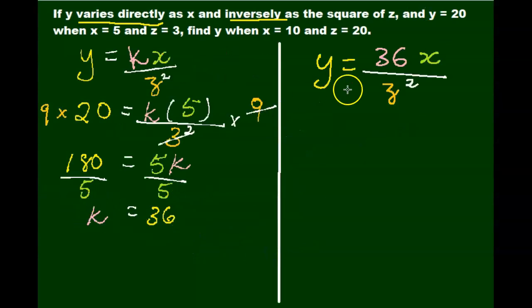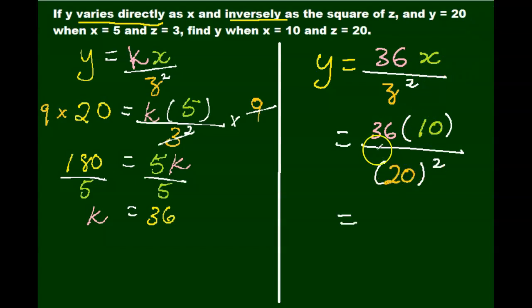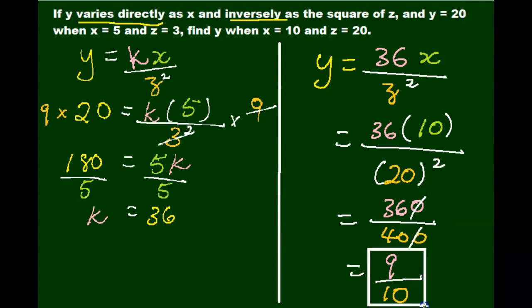So we can plug our k equals 36 into our original equation. So y equals 36x over z squared. And then we want to find our y when x equals 10 and z equals 20. So I'm going to change my x to 10 and my z to 20. Simplify. 36 times 10 gives me 360, and 20 squared gives me 400. We can cancel out the zeros. 36 and 40 are both divisible by 4, so that leaves me 9 over 10. And that's how we solve this problem.